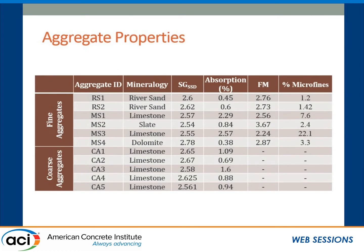This table represents the mineralogy of the aggregates we used and some physical properties. The two river gravels at the top meet ASTM C33 requirement. Manufacturer sands MS1 and MS3, which are made of limestone, have high micro-fine content. ASTM C33 allows a maximum micro-fine content of 5 to 7 percent depending on the use of the concrete. Manufacturer sand MS2 is from slate. When you break slate, it breaks as a plate — small and thin — so it has the worst shape and texture among all six fine aggregates. The final sand MS4 is dolomite. We have five coarse aggregates, all crushed limestone, all collected from the Dallas-Fort Worth area, because that is our target area as they do not have locally available natural sand.